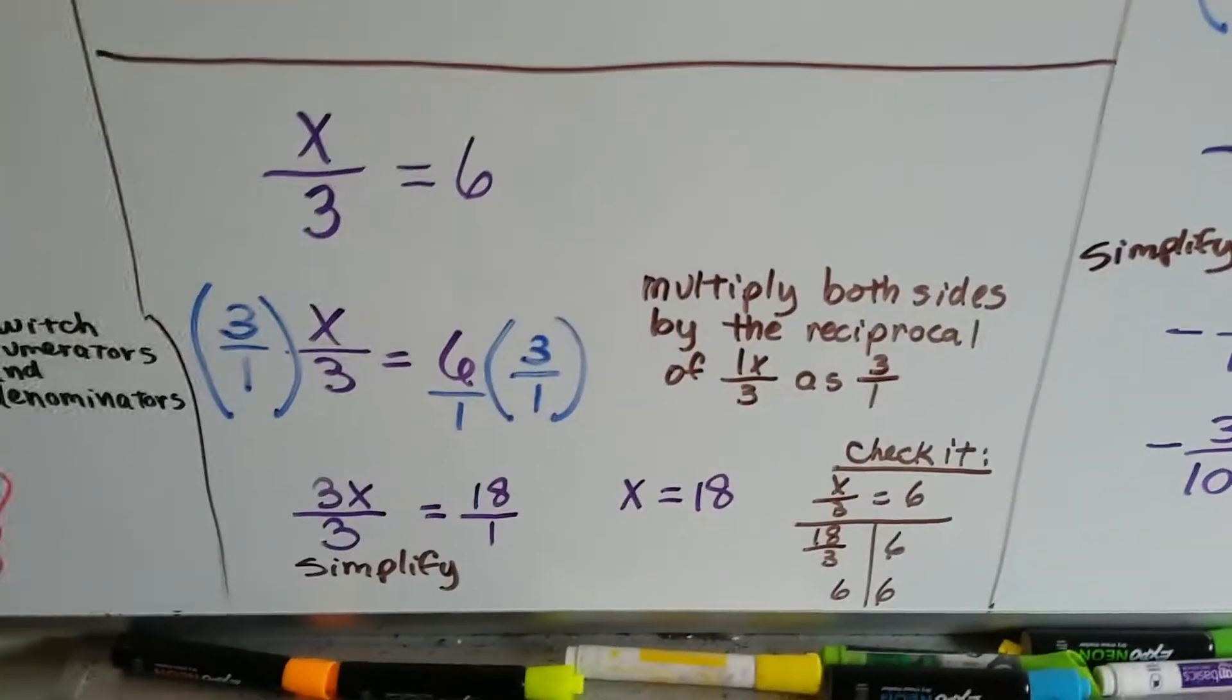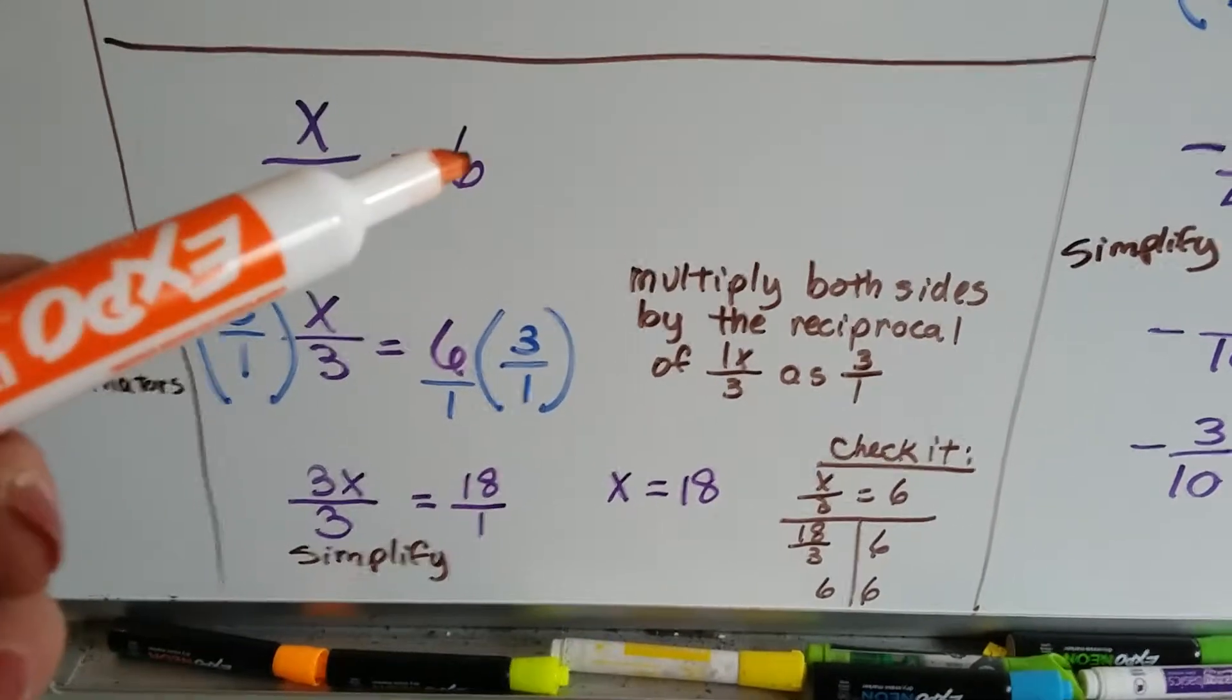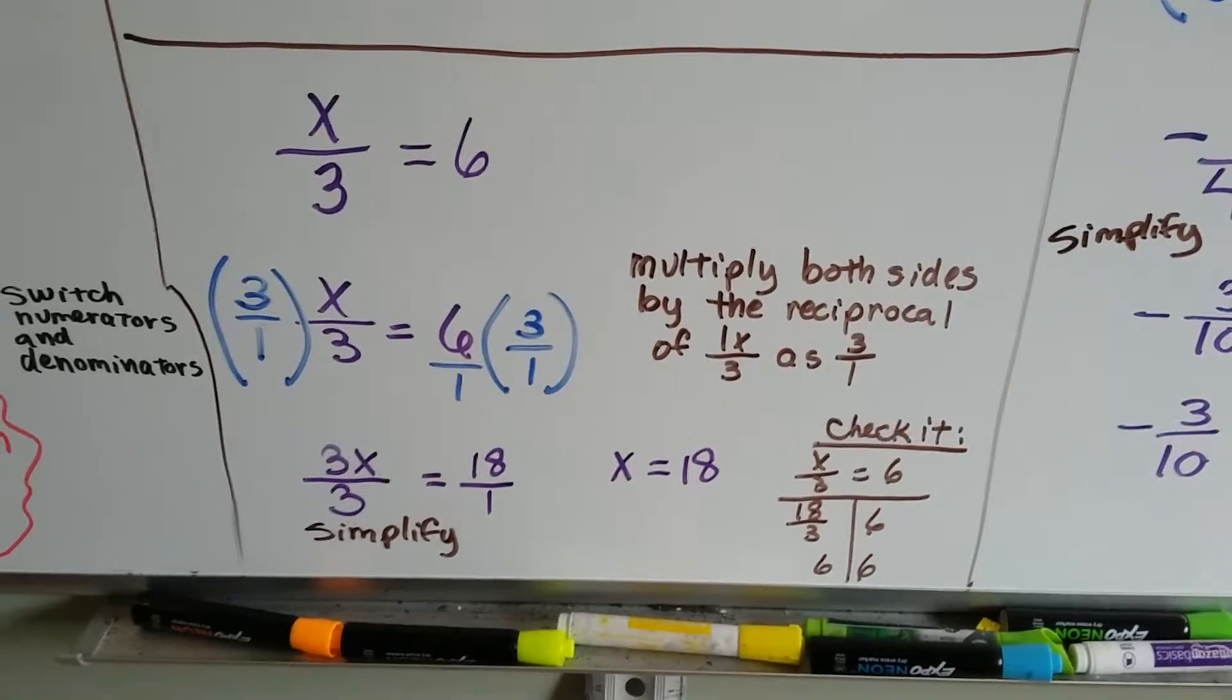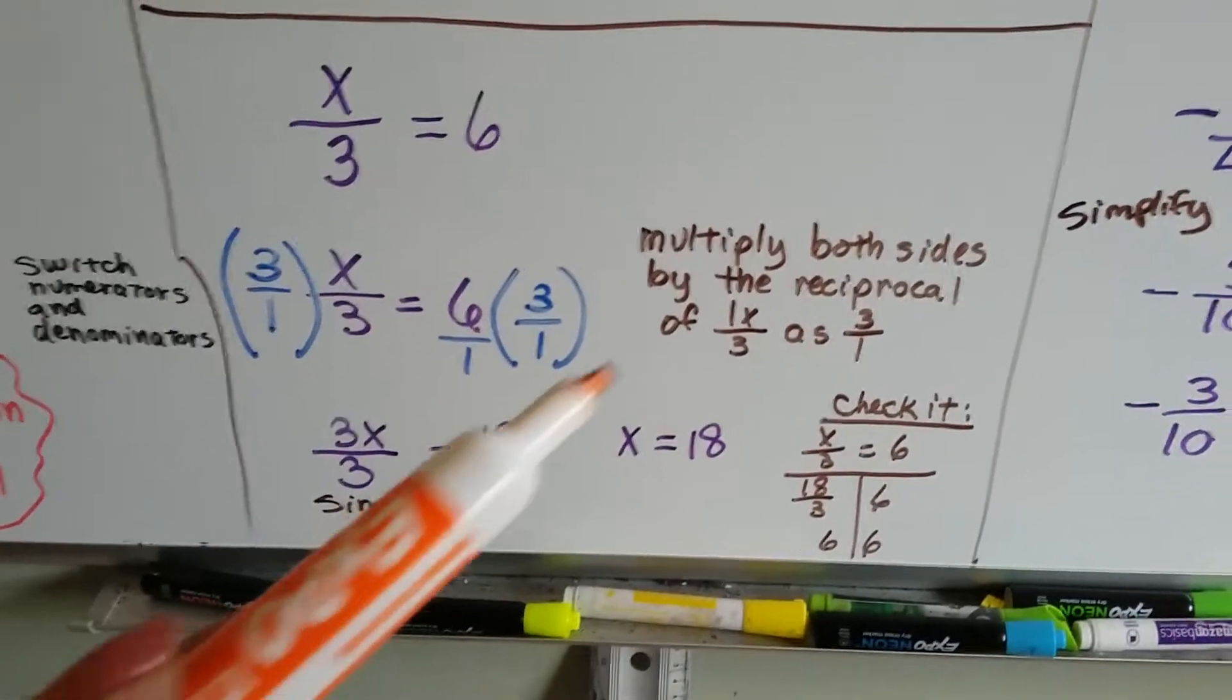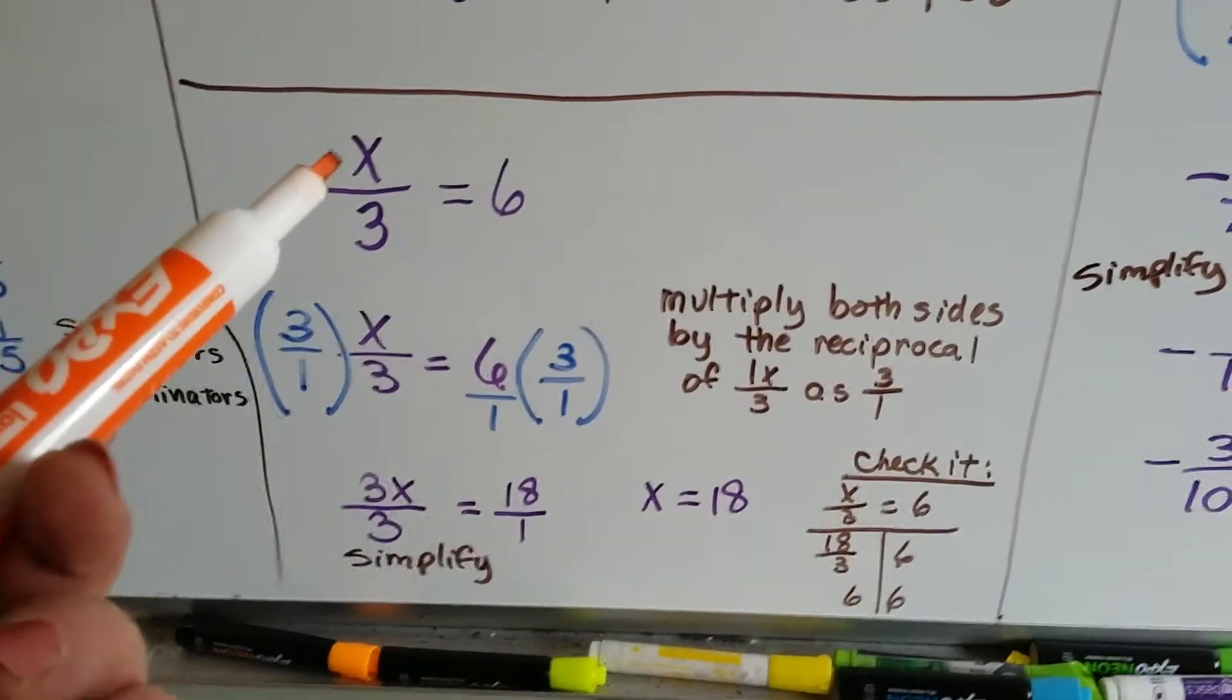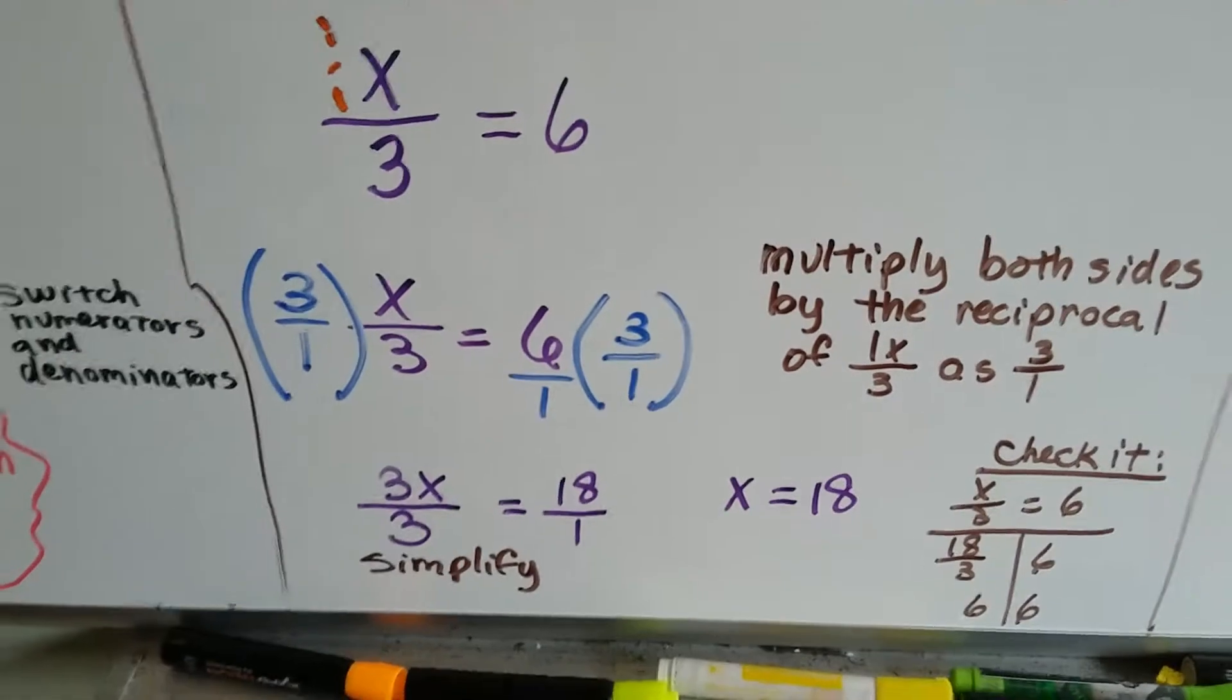We got one last one down here. We've got x over 3 equals 6. Now, we've learned before that we can just multiply the 6 times the 3 and get 18 and then put that up there. But let's do it the right way by showing our work. We'll multiply both sides by the reciprocal of the reciprocal of this one. How do you do a reciprocal when there's a variable there? Well, remember, our friend, the invisible one, is here, and he can help us.